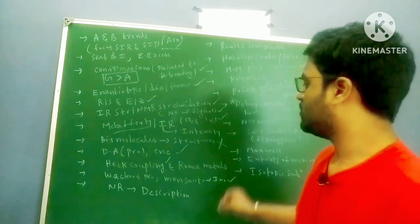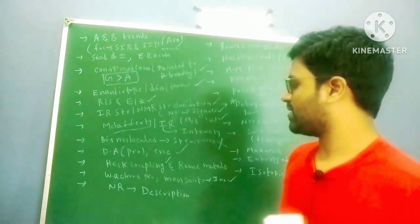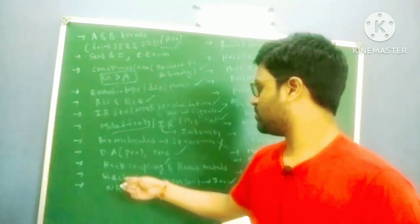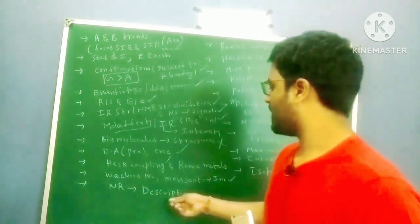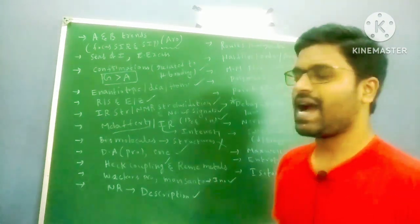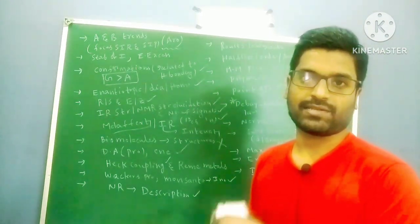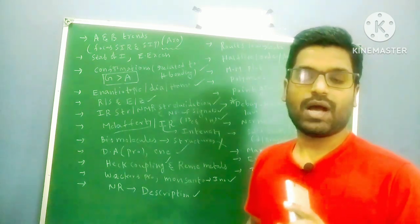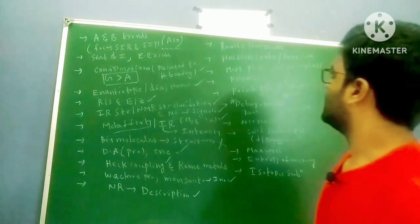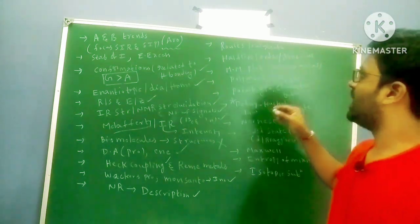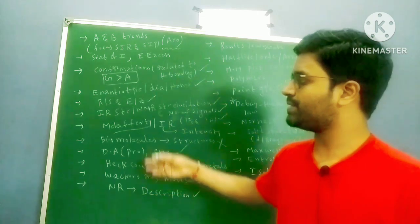Next, Wacker's process and the Monsanto acetic acid process in organometallic compounds — very important topics, don't miss these. Do questions on Wacker's process. For named reactions, I have already discussed important named reactions in my organic chemistry video — the link will be in the description.